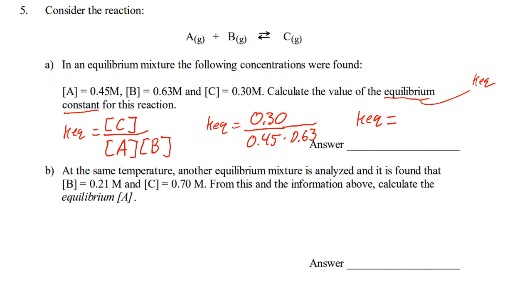Throw it on my calculator. 0.3, divided by 0.45, divided by 0.63. 1.058. So, if I am interested in sig figs, it should be 2 sig figs. Technically, it should be 1.1. Because it's 2 sig figs everywhere.